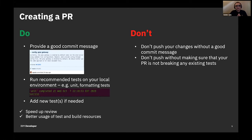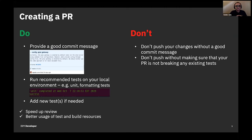You have your topic branch created and you're ready to work on changes. Before you push, the first thing is to create a good commit message — typically a short one-liner title about the changes, followed by some details in the body of the commit message. If you're working on a specific issue, also mention the issue number. This helps reviewers get an idea about the PR without even looking at the actual changes.